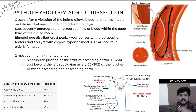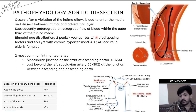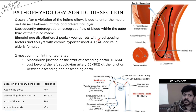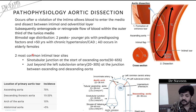There is a bimodal age distribution. Aortic dissection can happen in younger patients with predisposing factors as well as in elderly patients with chronic hypertension. In young females, aortic dissection is rare, but it can happen in elderly females.